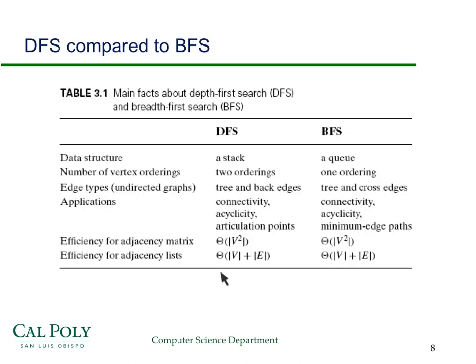This slide contains a good review summary. DFS uses a stack whereas BFS uses a queue. DFS has two orderings; BFS has only one. They have different types of edges. Both can be used for connectivity and detecting cycles. DFS is very good for finding articulation points — vertices that, if removed, would disconnect the graph. BFS finds minimum edge paths. The efficiencies are as noted.